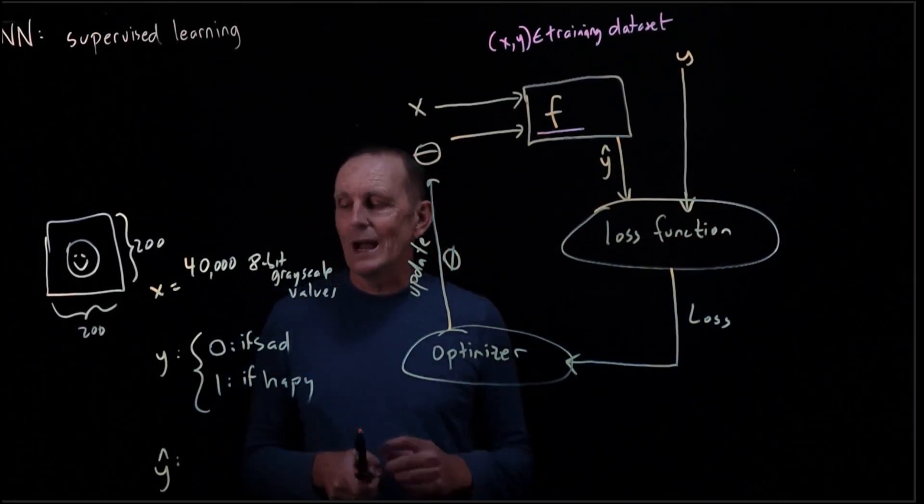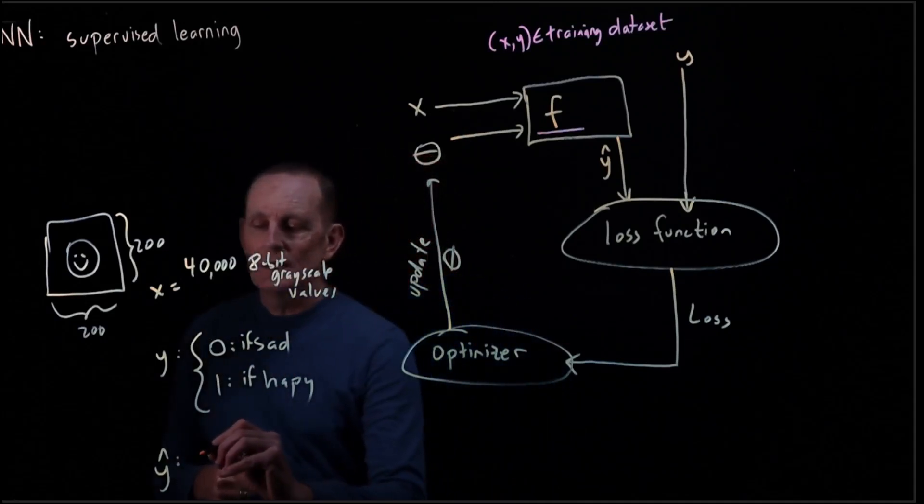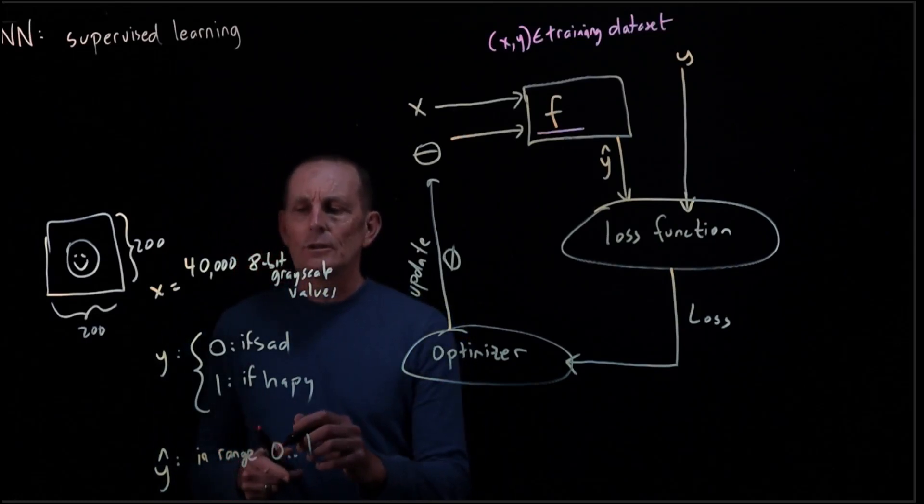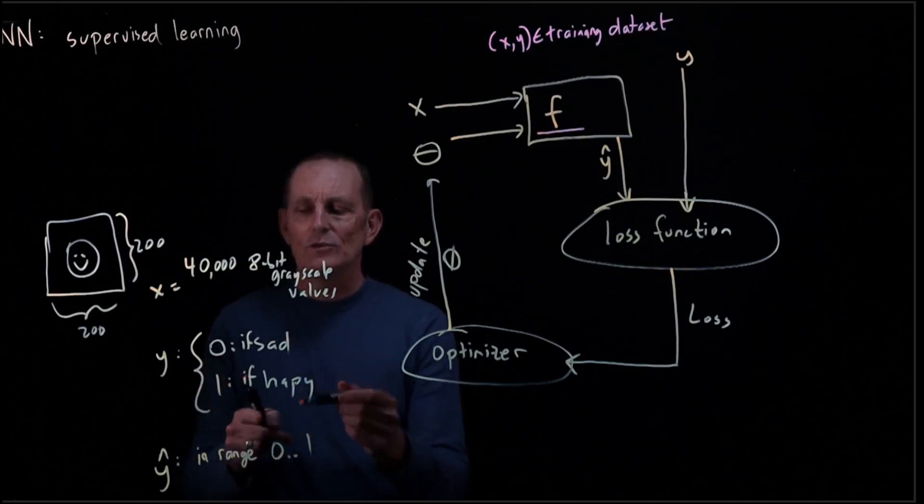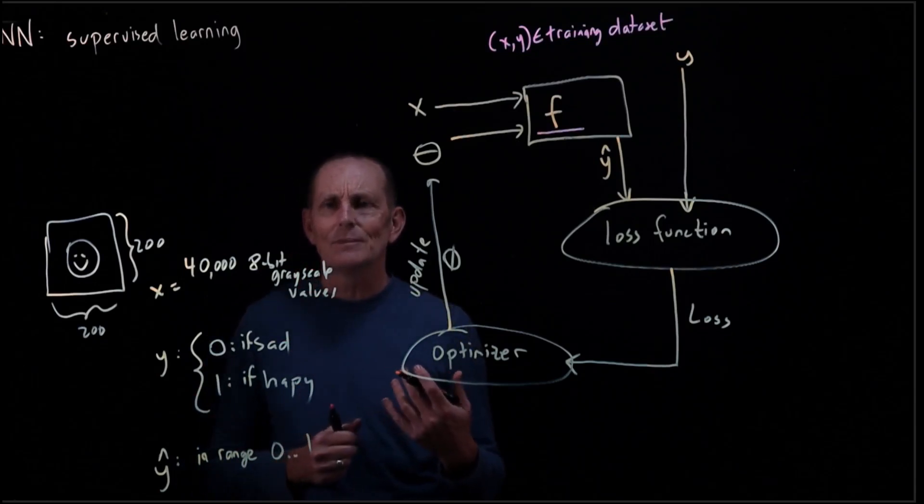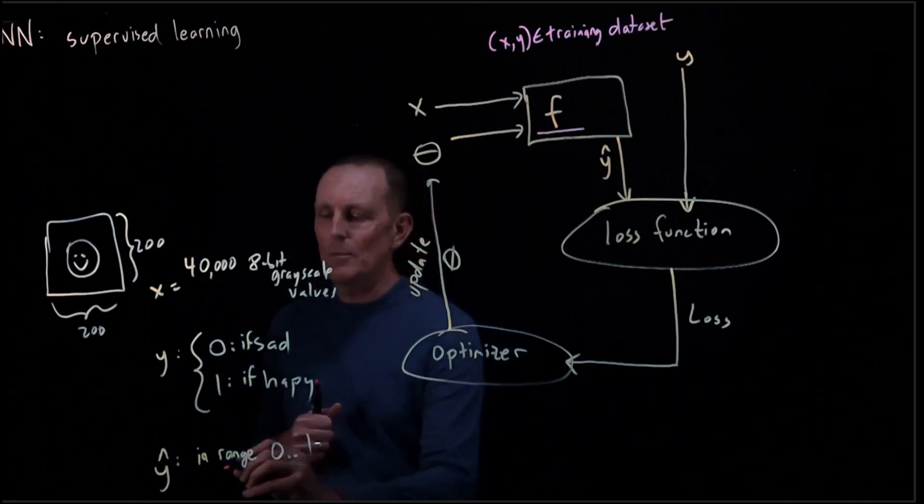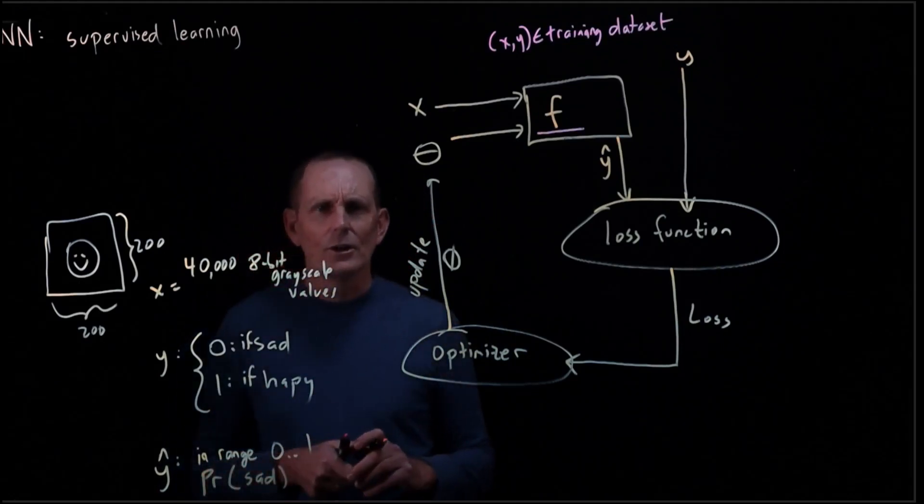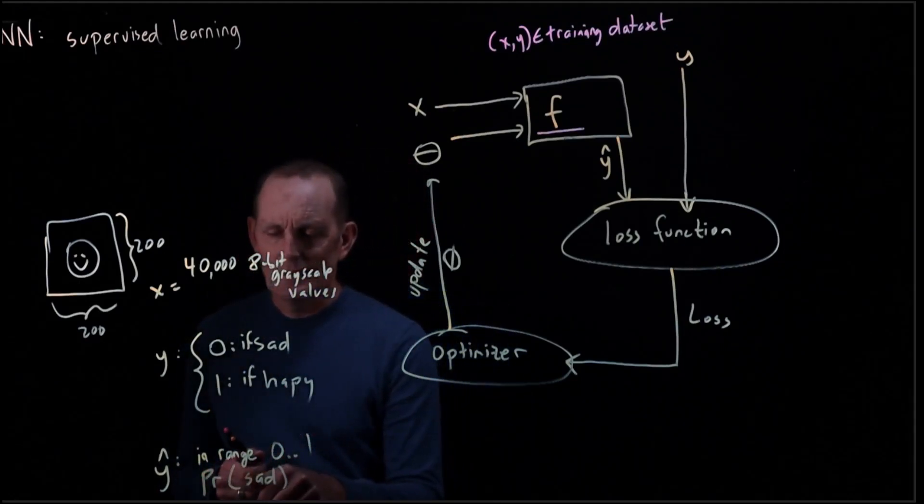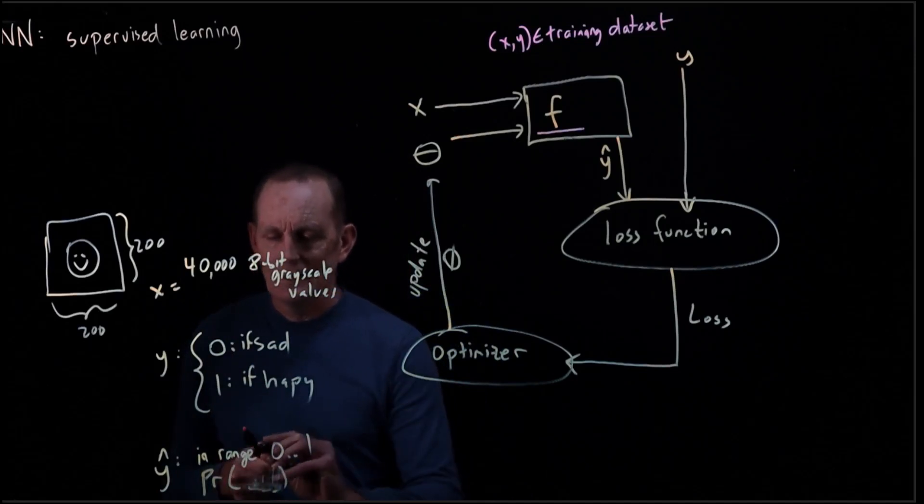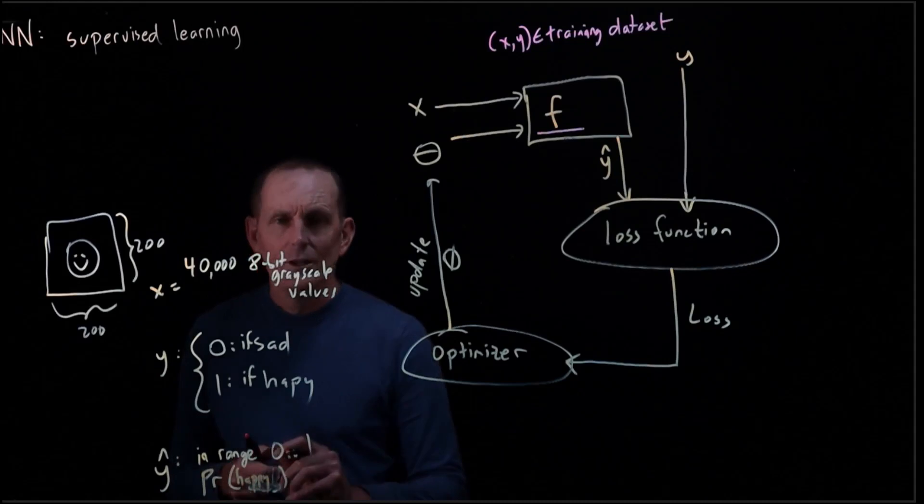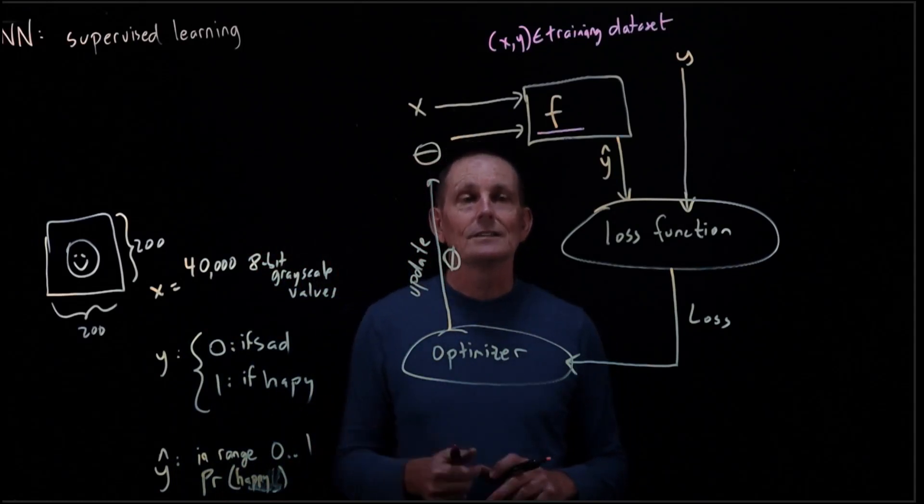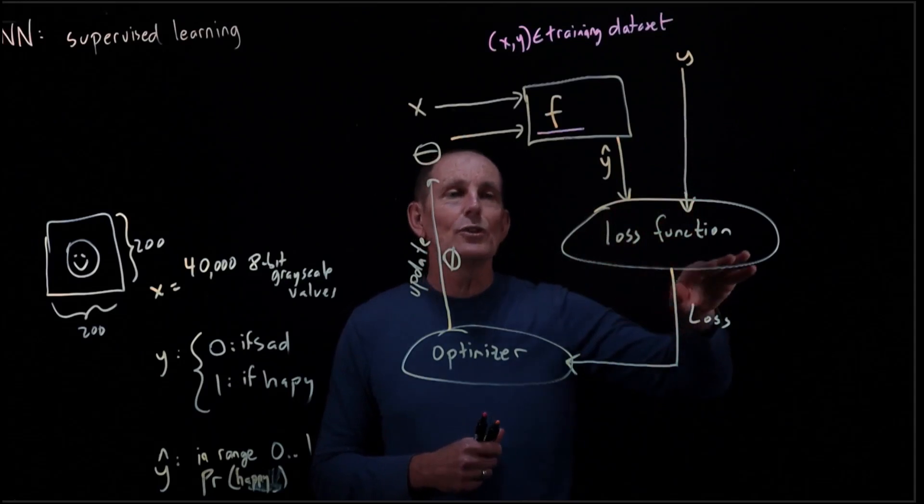We could do that. We could actually say Y-hat, instead of being 0 or 1, is going to be in the range 0 to 1. So if it's 0, it's sad. If it's 1, it's happy. And if it's in between, it's some confidence of how confident it is whether it's sad or happy. This is the probability that it's happy. So if the value is 1, we are 100% sure that it's happy. If the value is 0, we're 100% sure it's unhappy. And that would provide a nice smooth loss.